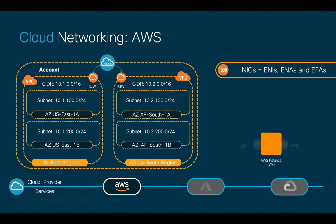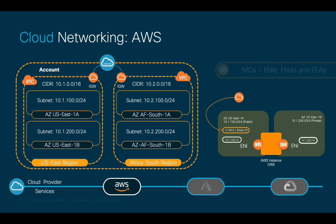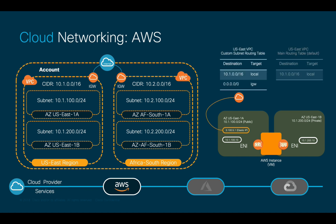As with on-prem, you can provide multiple ENIs or network adapters to your instances. When ENIs are associated to public subnets, they will have a private IP automatically assigned, and they will also have a public IP which can be your own or automatically assigned by AWS. AWS recommends that whether you use public or private subnets, you create your own routing tables to have better traffic control.